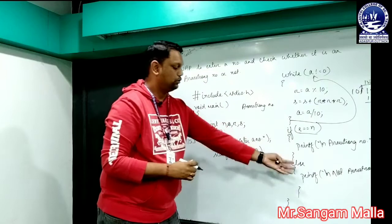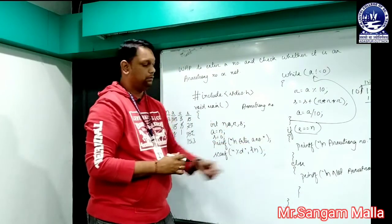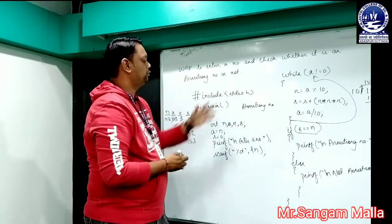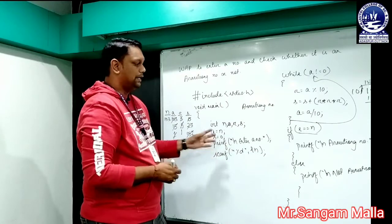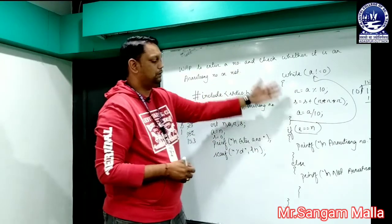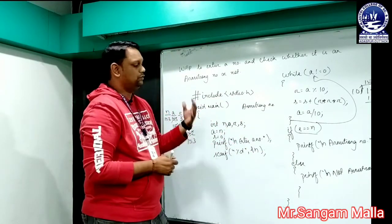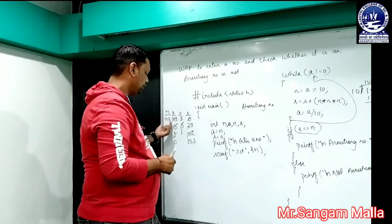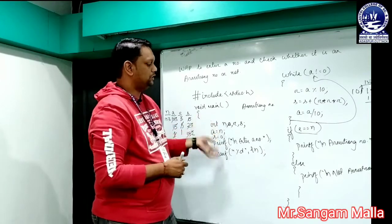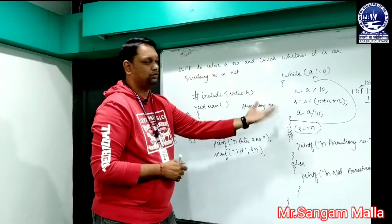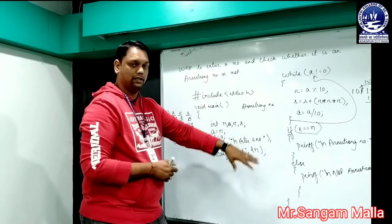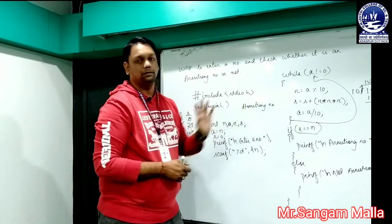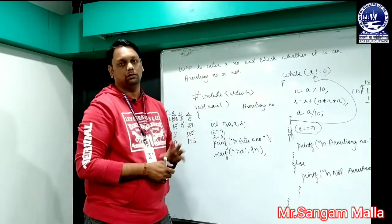It will not come to the else part because the first condition has been satisfied. This is the program for entering any number and checking whether it is an Armstrong number or not. As we discussed, 153 is an Armstrong number, and our program has also verified this correctly.